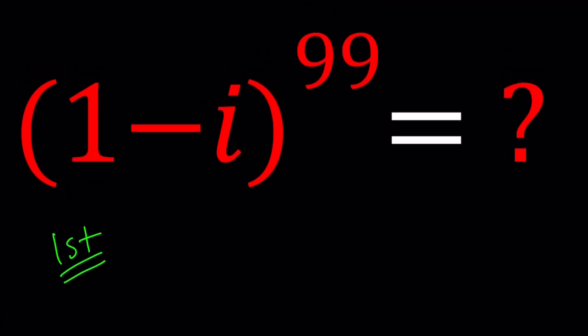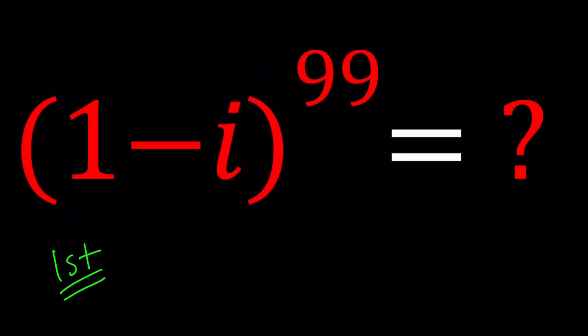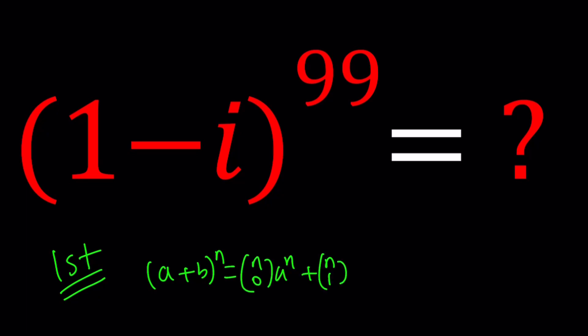For the first method, I'd like to use the binomial theorem. Are you familiar with the binomial formula? It goes like this: A plus B to the nth power is going to be n choose 0 times A to the n, plus n choose 1 times A to the power n minus 1 times B, and so on. If you apply this to the 99th power, you're going to have 100 terms.